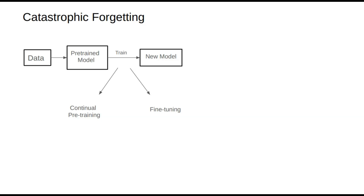Essentially, catastrophic forgetting is unavoidable. What we can do is employ certain strategies to reduce its likelihood. Let's look at methods to mitigate catastrophic forgetting using fine-tuning as an example.